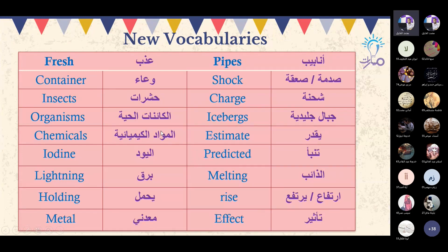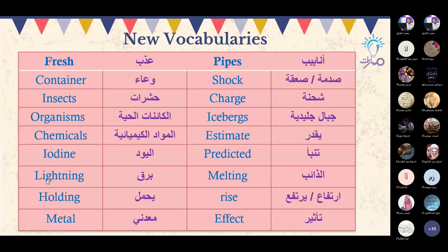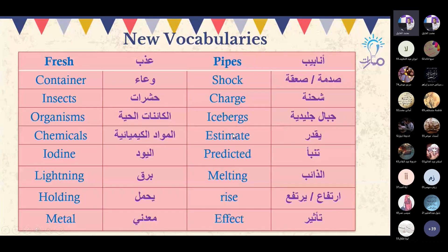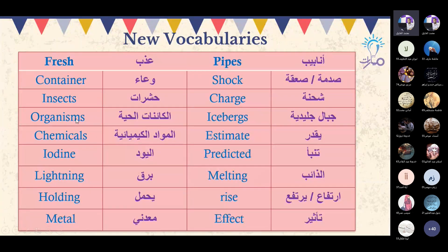Once again: Fresh, Container, Insects, Organisms, Chemicals, Iodine, Lightning, Holding, Metal, Pipes, Shock, Charge, Icebergs, Estimate, Predicted, Melting, Rise, and Effect. العمود اليساري، نبدأ بالعمود اليساري.